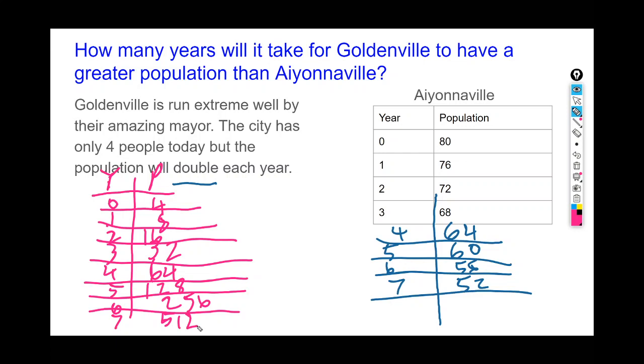We can see when something increases exponentially, it goes up really, really fast. Eventually this will become a very large number. After seven years, the population of Goldenville, which is run extremely well—everyone has jobs, there's little crime, people want to live there, that's why the population is doubling—is 512. And the population of Aiyonnaville is only 52. Remember, Aiyonnaville started with 80 people while Goldenville only started with 4, had 20 times the population.